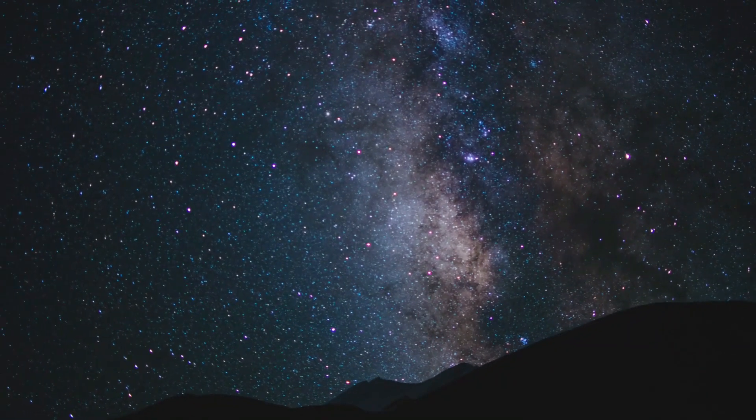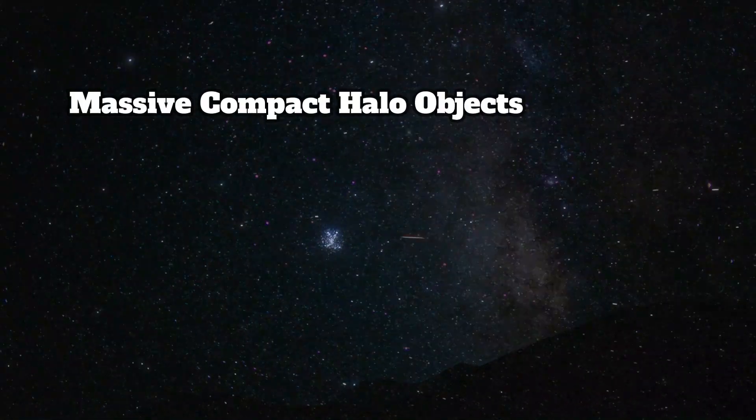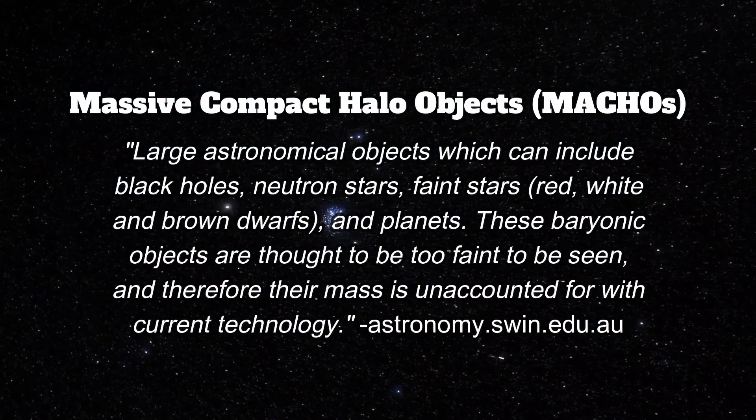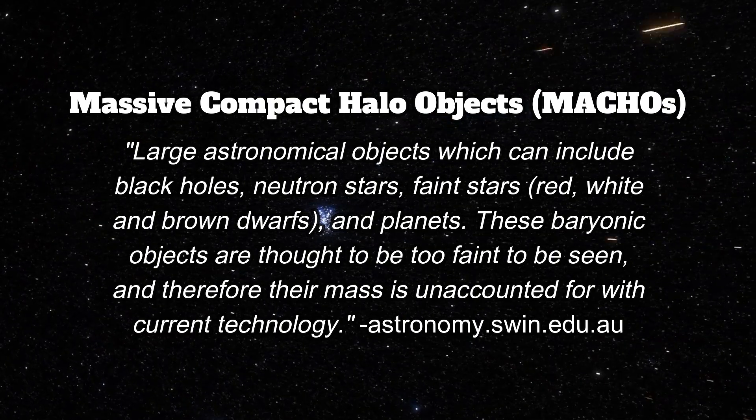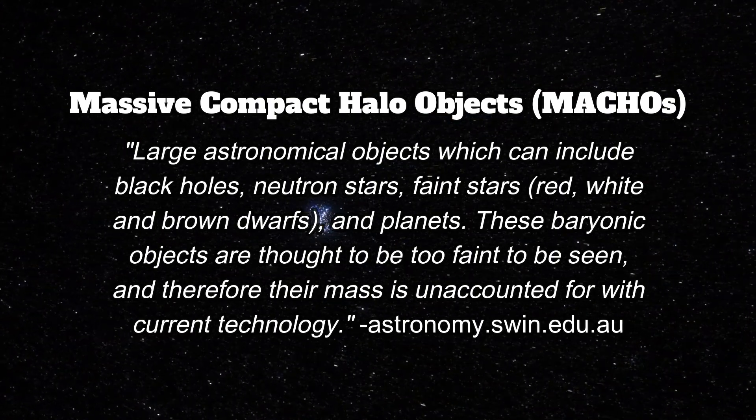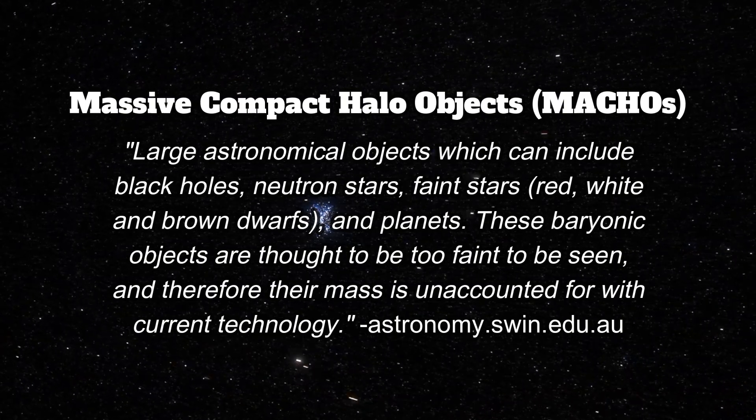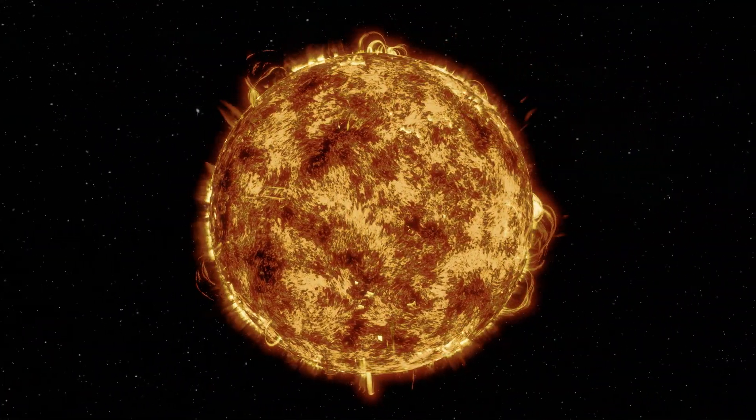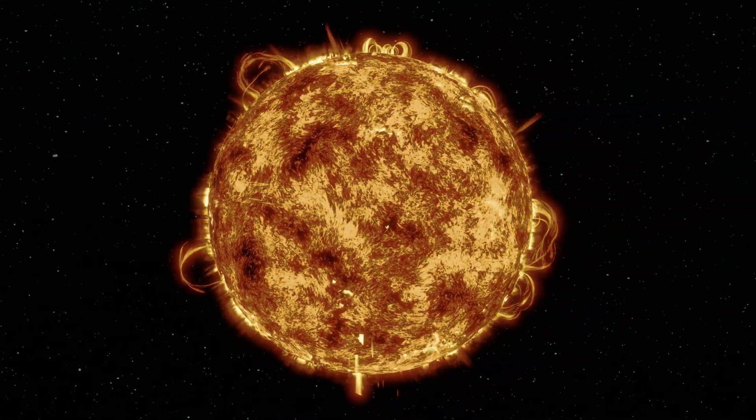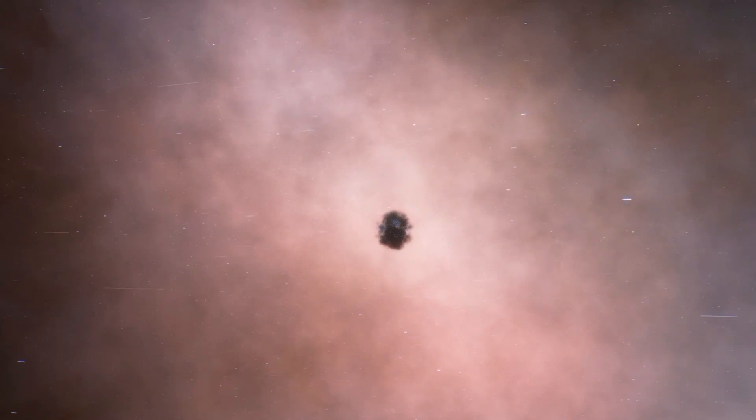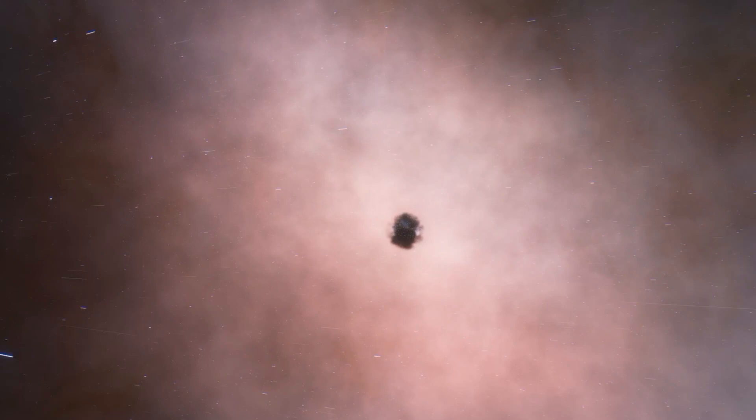And last but certainly not least, our last potential candidate for dark matter that we'll be covering in this video is actually the only hypothesis that calls for dark matter being a form of baryonic matter. Known as massive compact halo objects, or MACHOs for short, some theorists believe there is no exotic invisible matter out there at all, but instead the missing mass we cannot visibly account for in astronomical structures is actually tied up in brown dwarfs, which are failed stars that aren't massive enough to sustain nuclear fusion. The other conclusion that these scientists believe is that this extra mass could be tied up in dense chunks of heavy elements too.